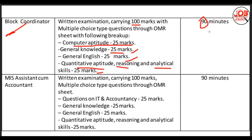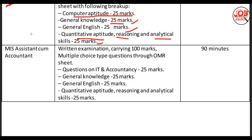Assistant Account Manager: the exam is 100 marks, 90 minutes. IT and Accountancy is 25 marks. General Knowledge is 25 marks. General English is 25 marks. Quantitative Aptitude, Reasoning and Analytical Skill is 25 marks.